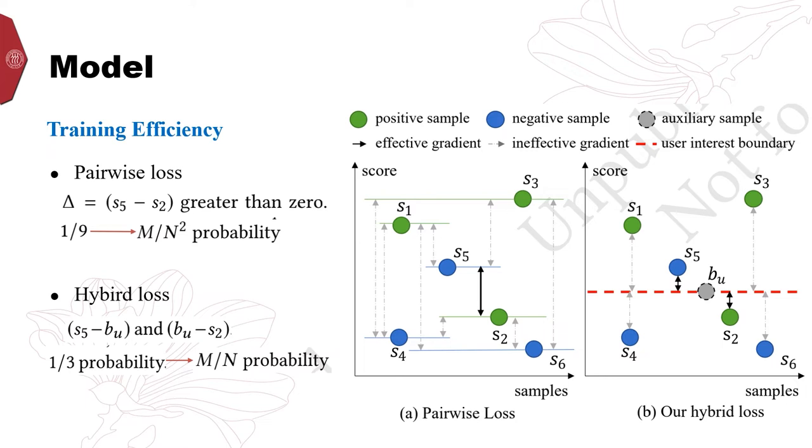For the pairwise loss, nine pair training instances are generalized by the combination of any two positive and negative samples. But only the pair S2, S5 can provide effective gradient information to update the model.